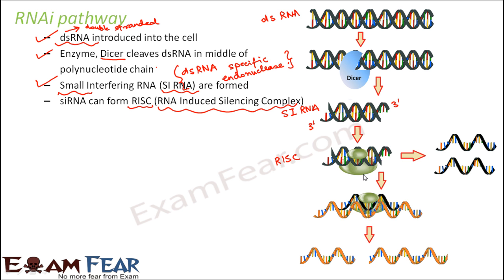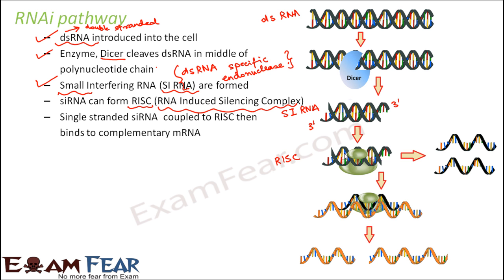The siRNA combines with other protein structures to form the entire complex known as RISC. Some specialties of RISC are: it has a slicer capable of cutting a particular nucleic acid, and it can cause unwinding of the double-stranded RNA. This complex has the ability to unwind and separate the two strands of RNA, creating two single-stranded RNA structures.